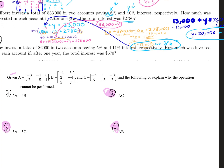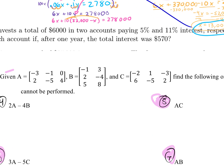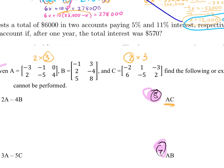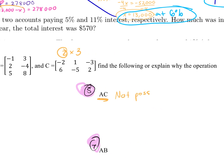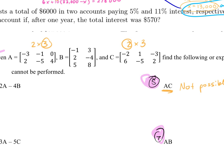For number five, we need to multiply A times C. First check if multiplication is possible: matrix A is two-by-three and matrix C is also two-by-three. Since the inner dimensions (three and two) don't match, multiplying A times C is not possible. For number seven, A is two-by-three and B is three-by-two — the inner dimensions match, so A times B is possible, and the result will be a two-by-two matrix.